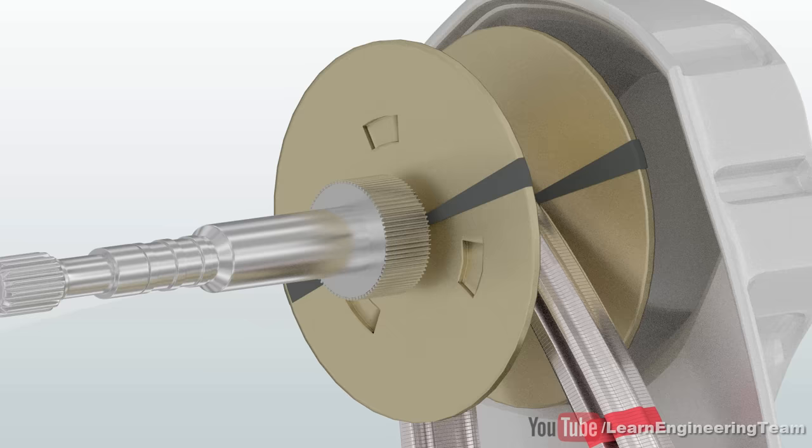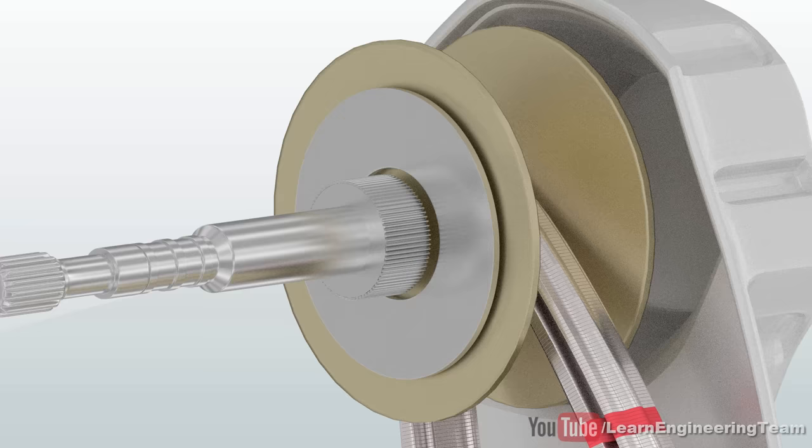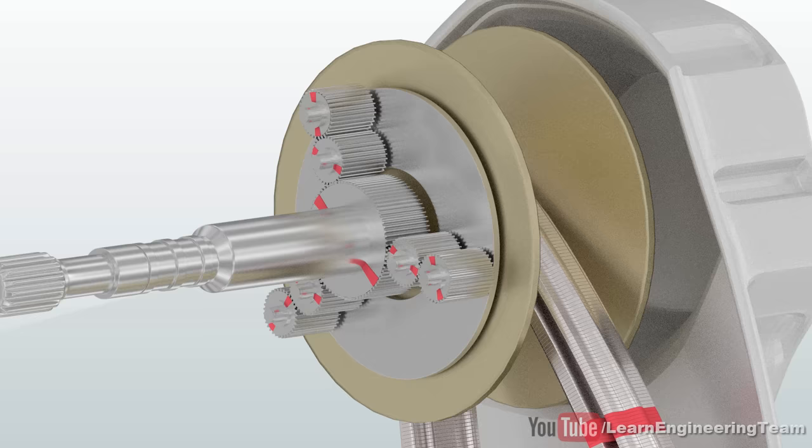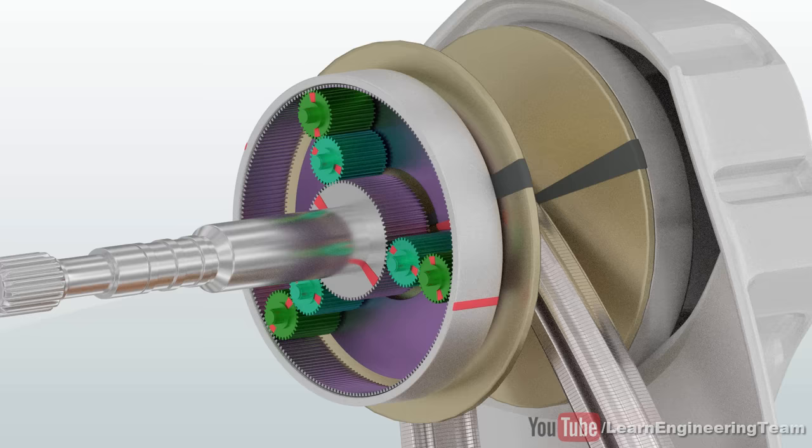The input shaft is connected to the sun gear. The carrier of the planetary set is fitted with the input pulley. This means that the output of the planetary set is drawn from the carrier. A two-row planet gear set is fitted with the carrier.